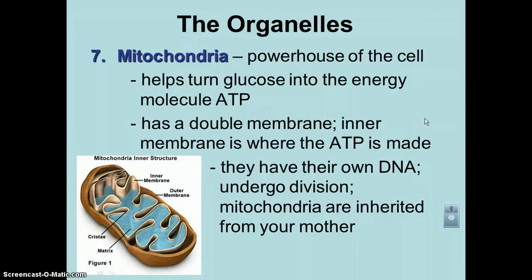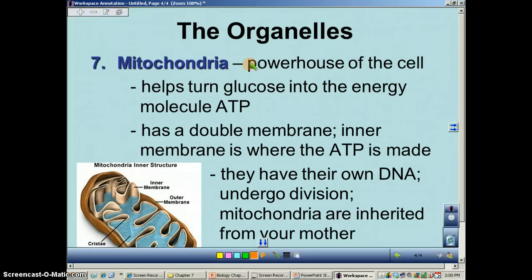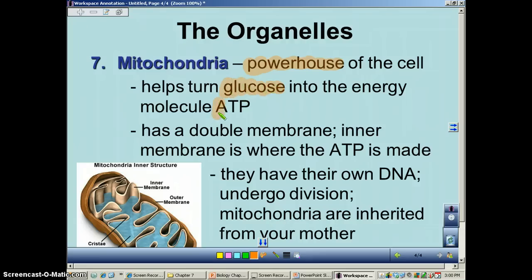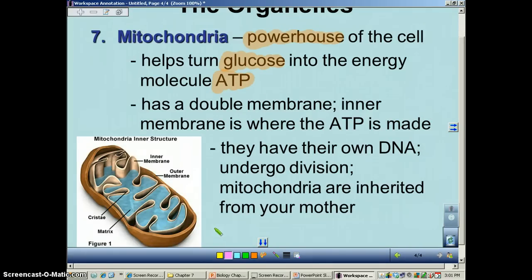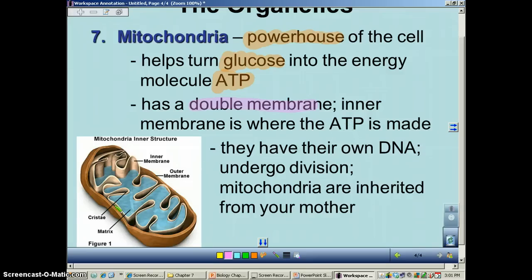Our next organelle is the mitochondria. We'll go over it in more detail in chapters 8 and 9, but the mitochondria is known as the powerhouse of the cell because it's the place where you take glucose and turn it into ATP, which the cell can use. The mitochondria is somewhat unique and very prokaryotic-like. It has a double membrane, and it's the inner membrane where the ATP is made. See these little folds right here? They're called cristae, and this is where the ATP is made. Mitochondria also have their own DNA and undergo a type of prokaryotic cell division.